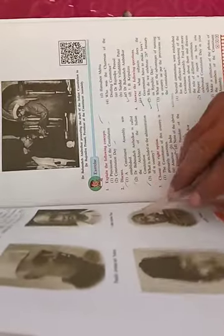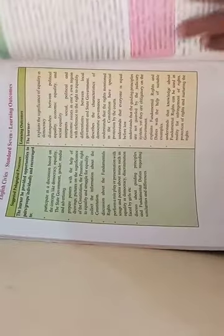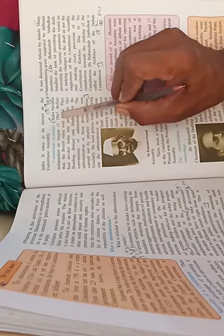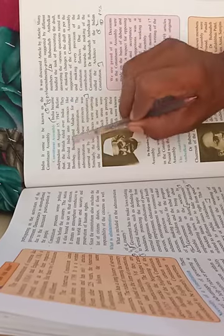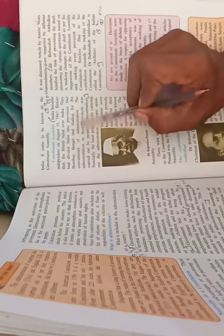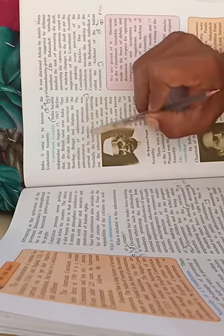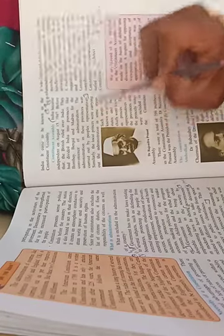Next question: Discuss - A constitution assembly was established. The answer is here. India became independent on August 15, 1947. Before that, the British ruled over India. They had divided India into provinces like Bombay, Bengal, and Madras for the convenience of administration. The administration in these provinces was carried out by the people's representatives. Similarly, the local princes were carrying out the administration in some areas.